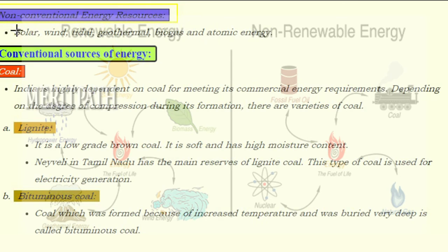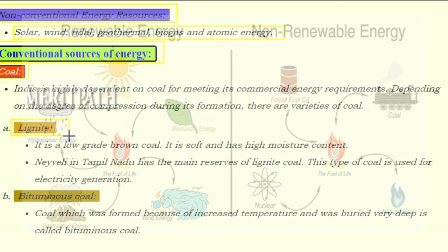Non-conventional energy resources include solar, wind, tidal, geothermal, biogas, and atomic energy. India is highly dependent on coal for meeting its commercial energy requirements. Depending on the degree of compression, there are varieties of coal. Lignite is a low-grade brown coal that is soft and has high moisture content. Neyveli in Tamil Nadu has the main reserves of lignite, which is used for electricity generation.